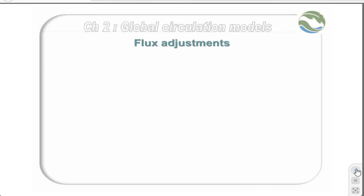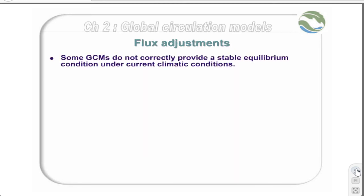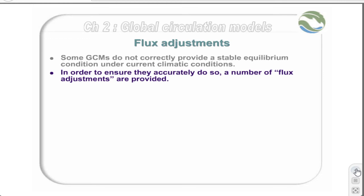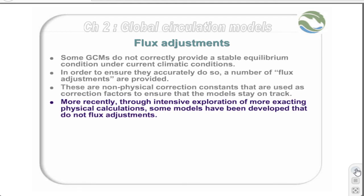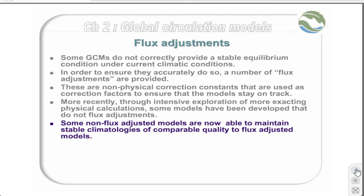Some GCMs do not correctly provide a stable equilibrium condition under current climatic conditions. In order to ensure that they accurately do so, a number of flux adjustments are provided. Flux adjustments are non-physical correction constants used as correction factors to ensure that the models stay on track. More recently, through intensive exploration of more exacting physical calculations, some models have been developed that do not use flux adjustments, and some non-flux adjusted models are now able to maintain stable climatologies of comparable quality to flux adjusted models.